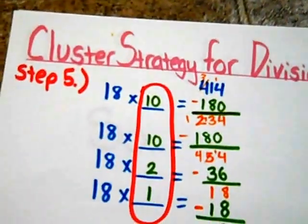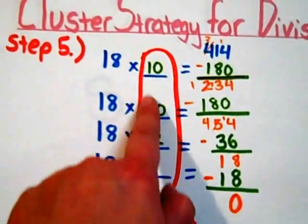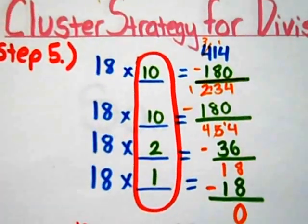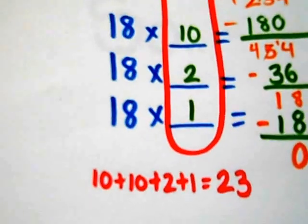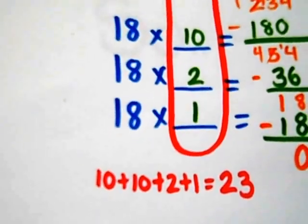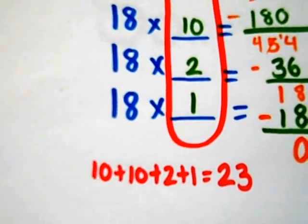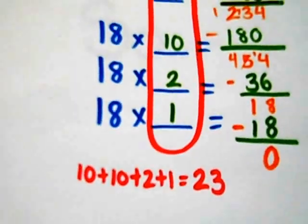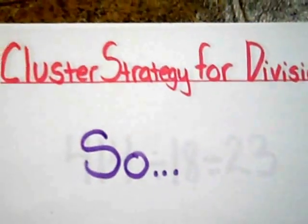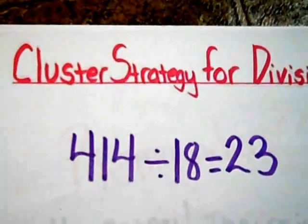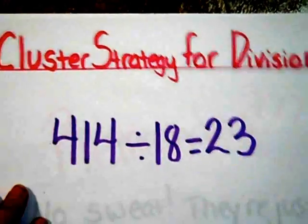I know I can move on to step number five and cluster up all of the landmark numbers that I used in the missing factors. I cluster them and I add them. 10 plus 10 is 20. 20 plus 2 is 22. 22 plus 1 is 23. So, 414 divided by 18 is 23.